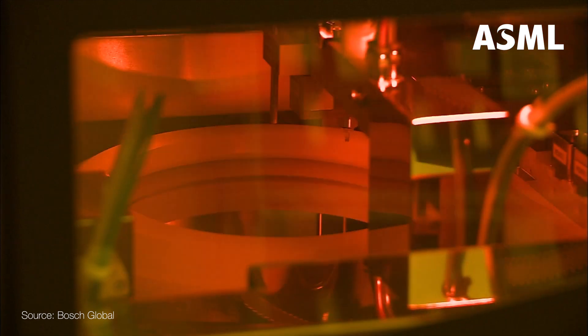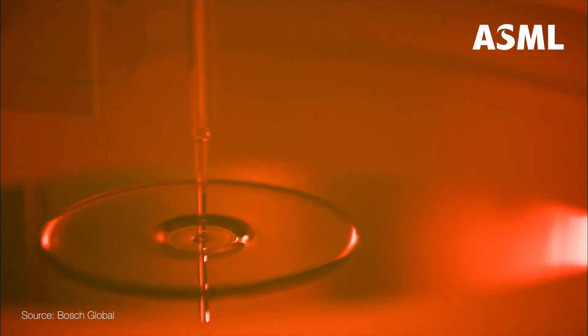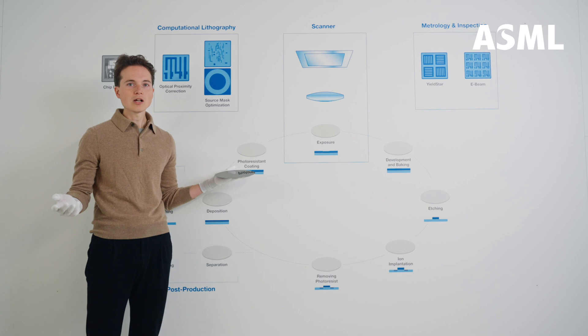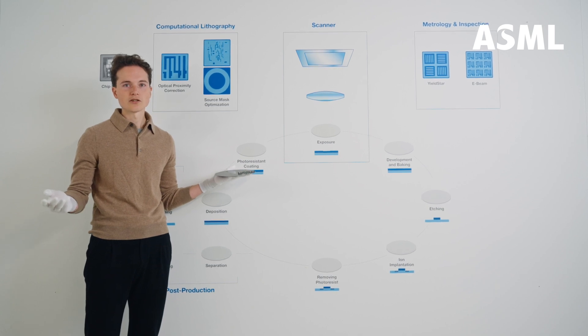Next, we cover the wafer with a light-sensitive coating known as photoresist. This will allow us to start building structures.